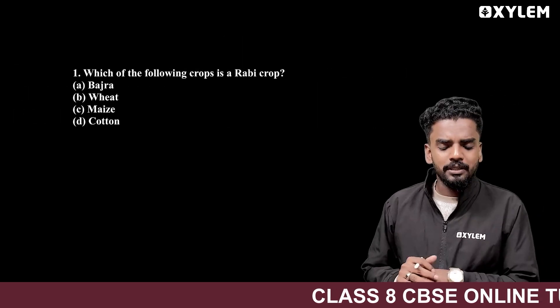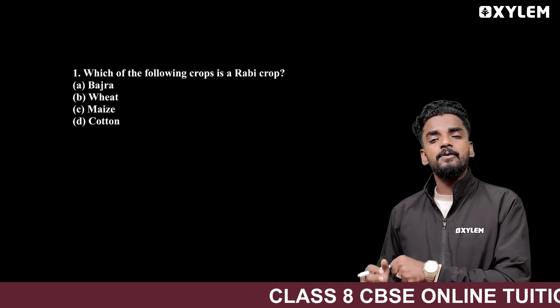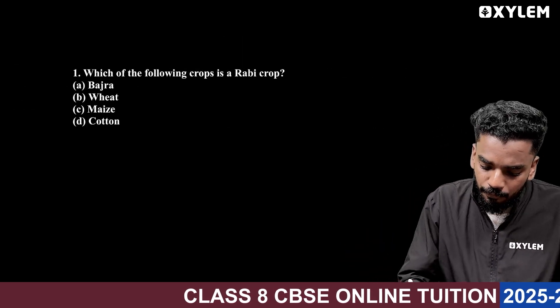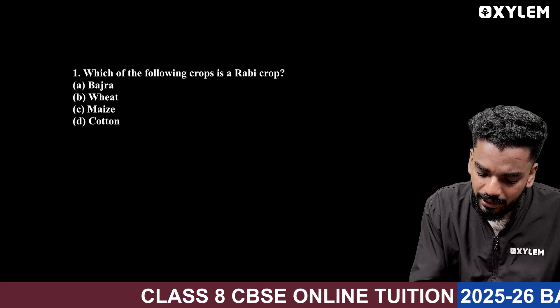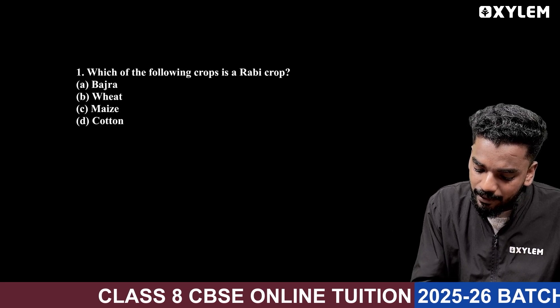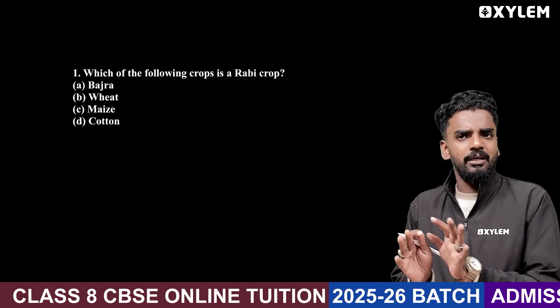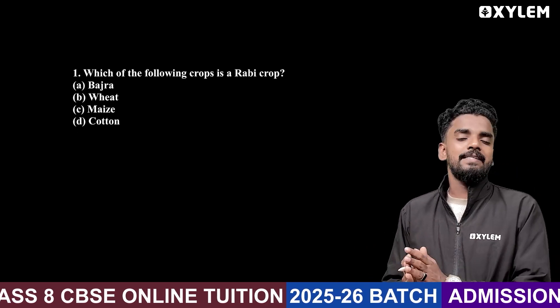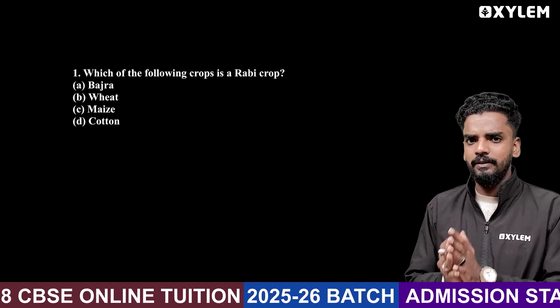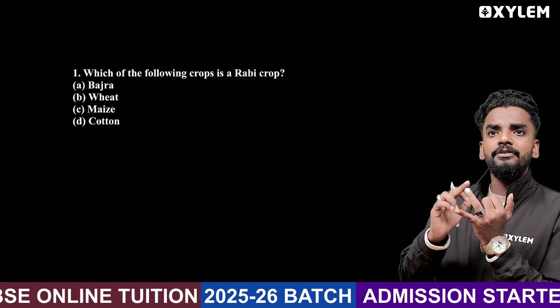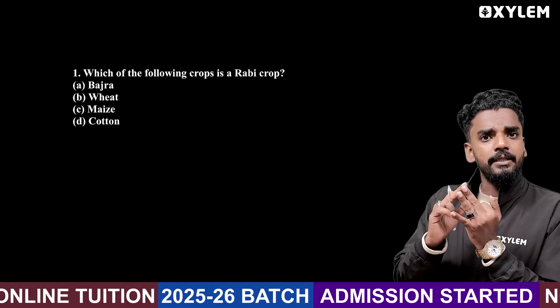I will start with the first question: which of the following crops is a Rabi crop? We have three cropping seasons actually — Kharif, Rabi, and Zaid.